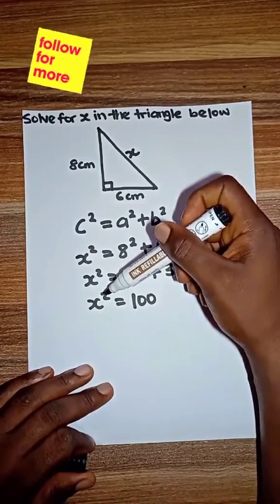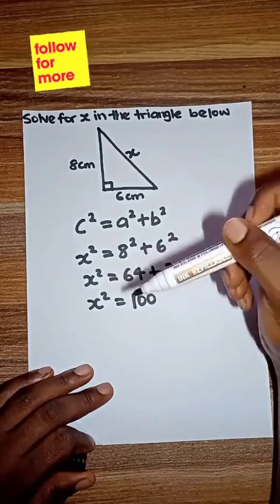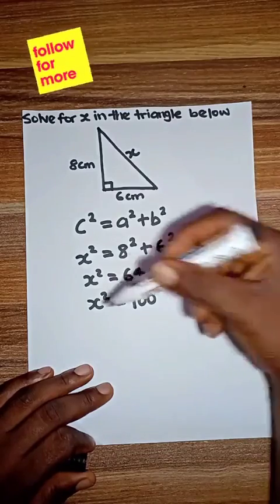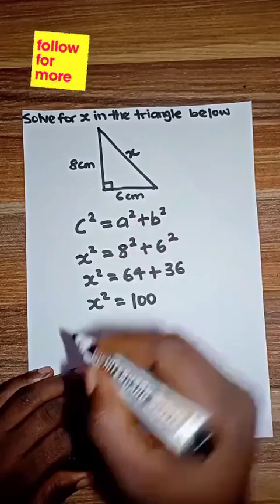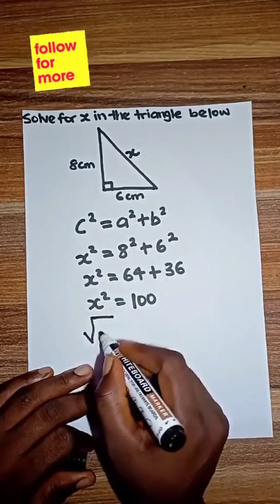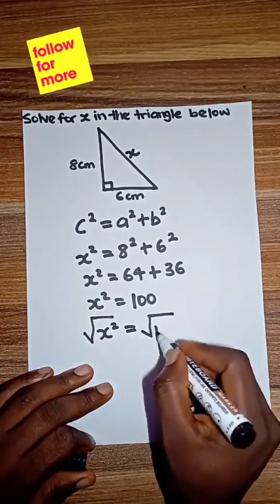The opposite of square is square root, so we introduce square root to both sides of the equation so that we can cancel out the square. So we have √(x²) = √100.